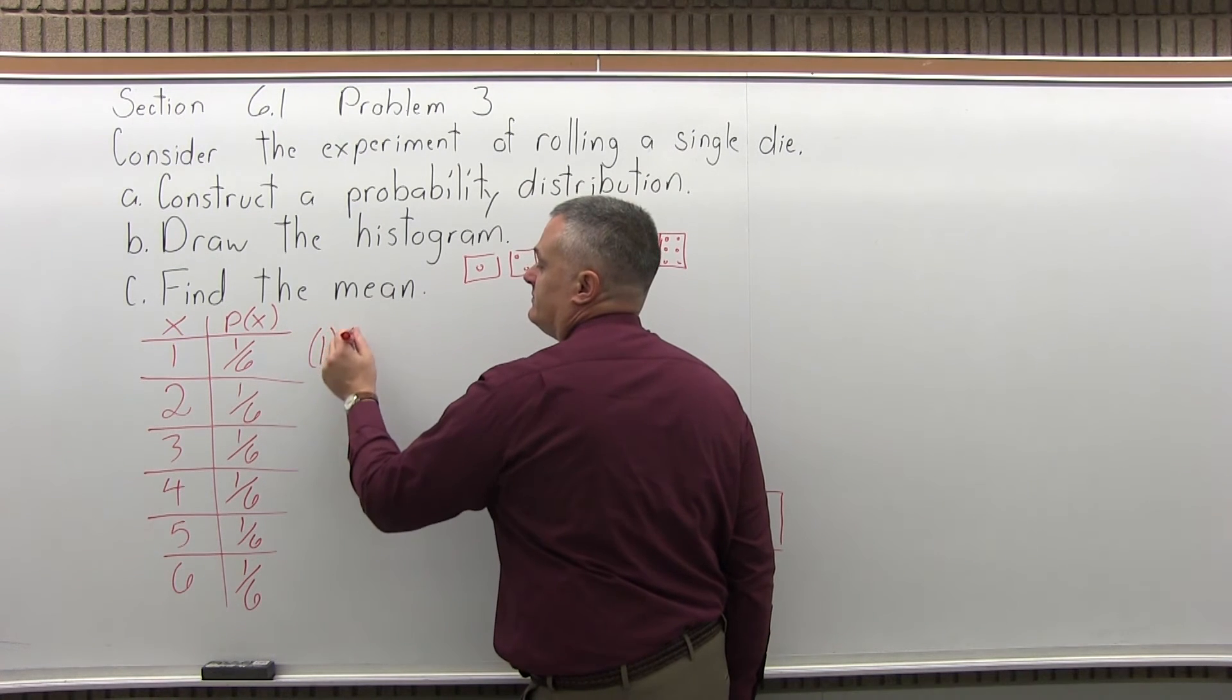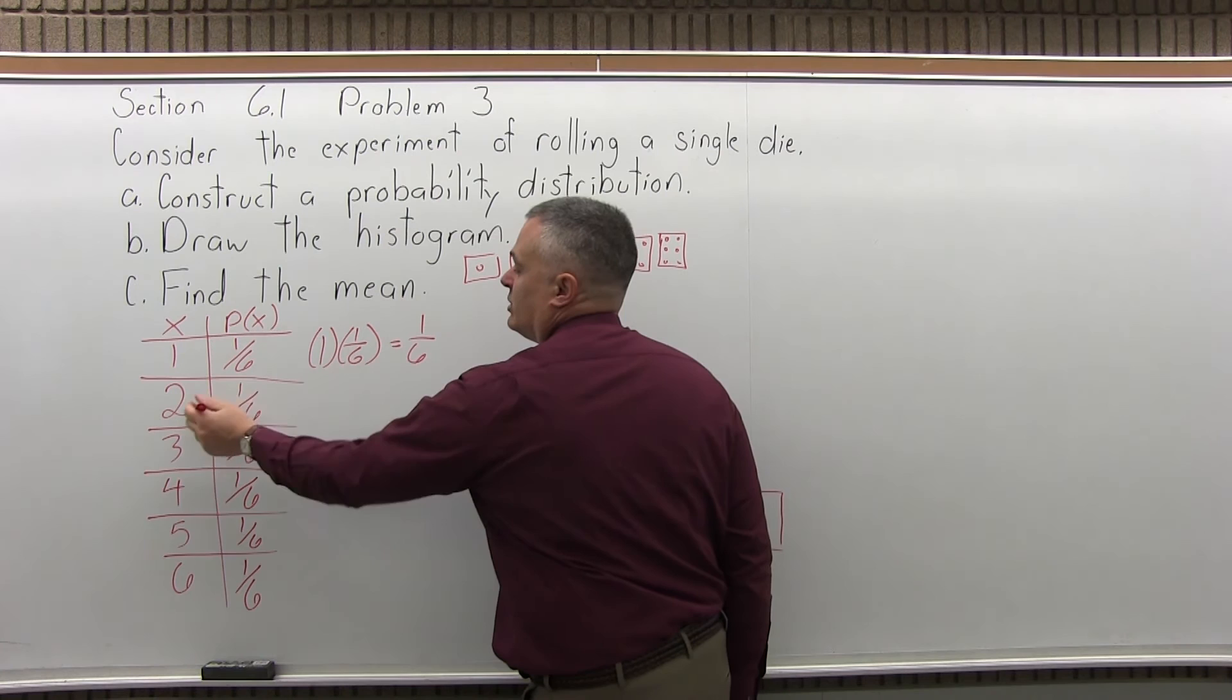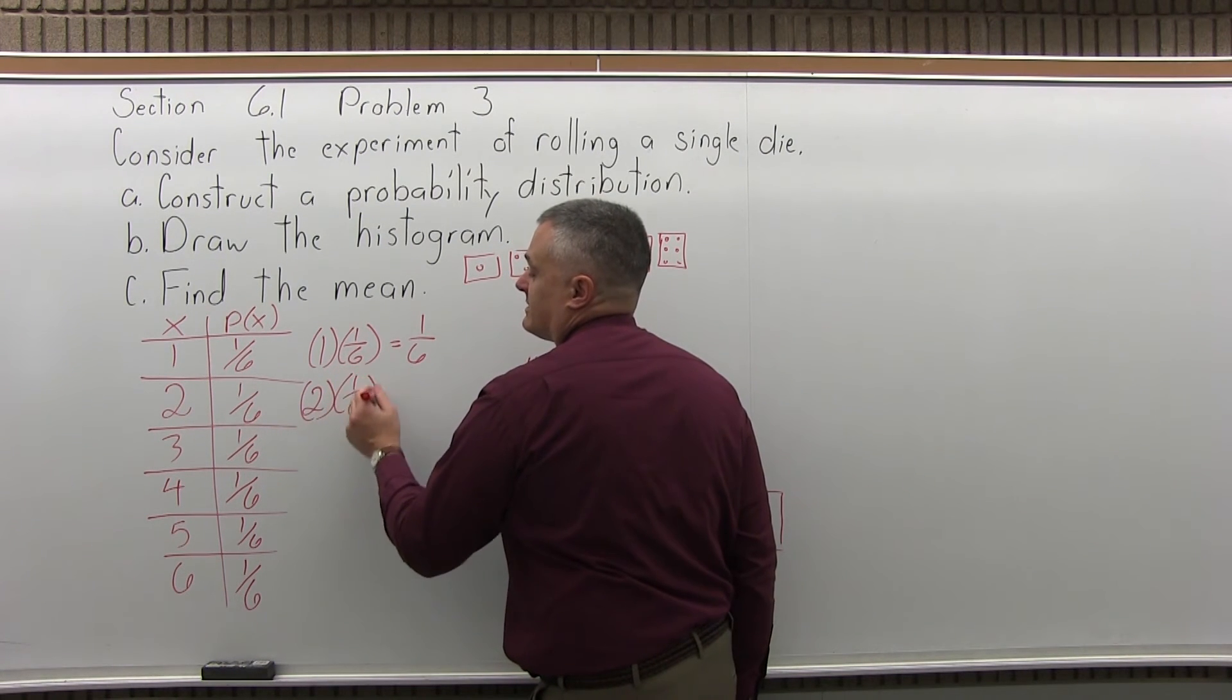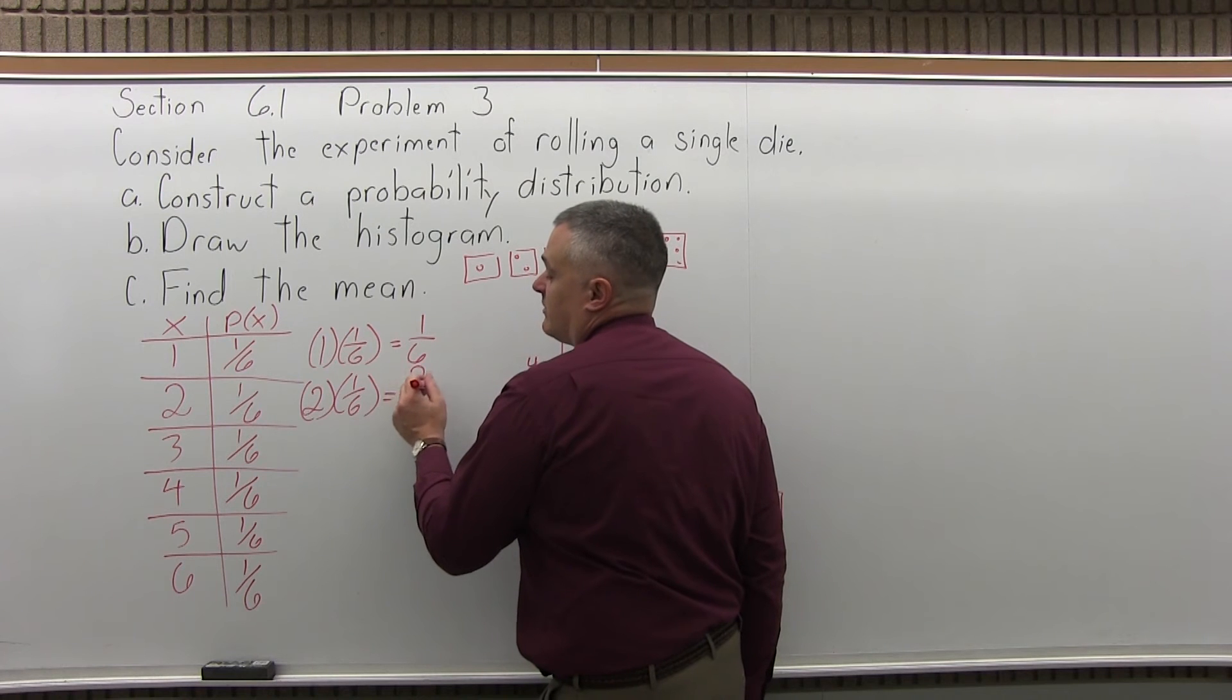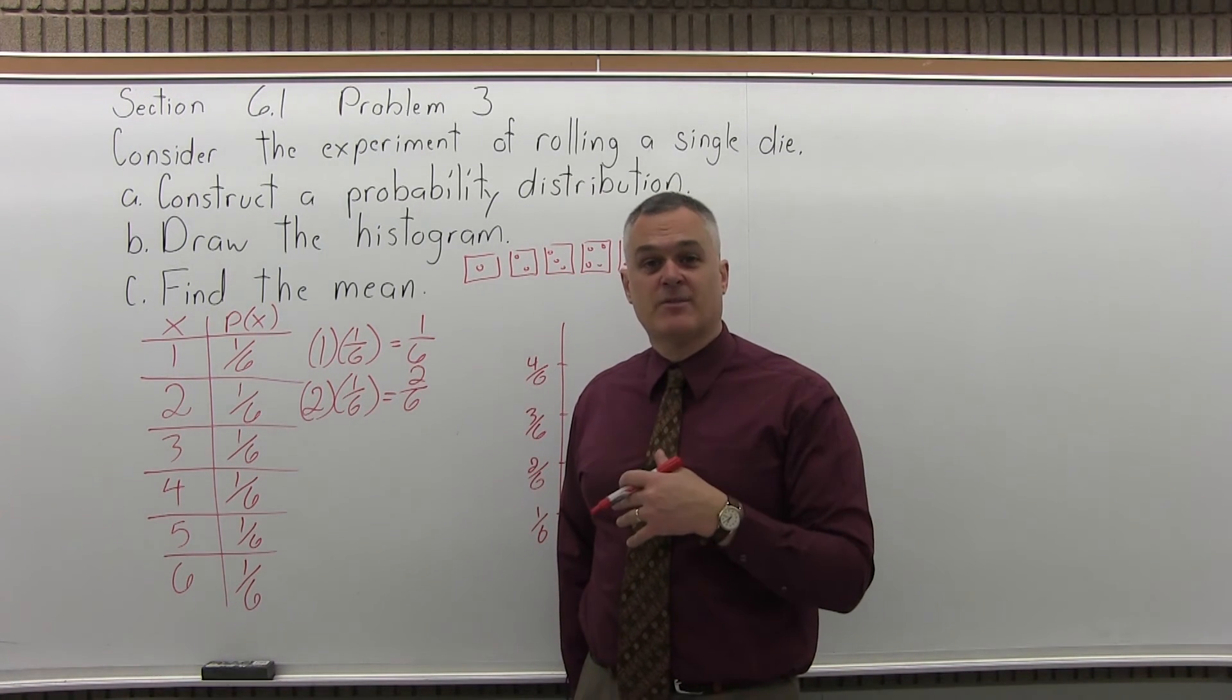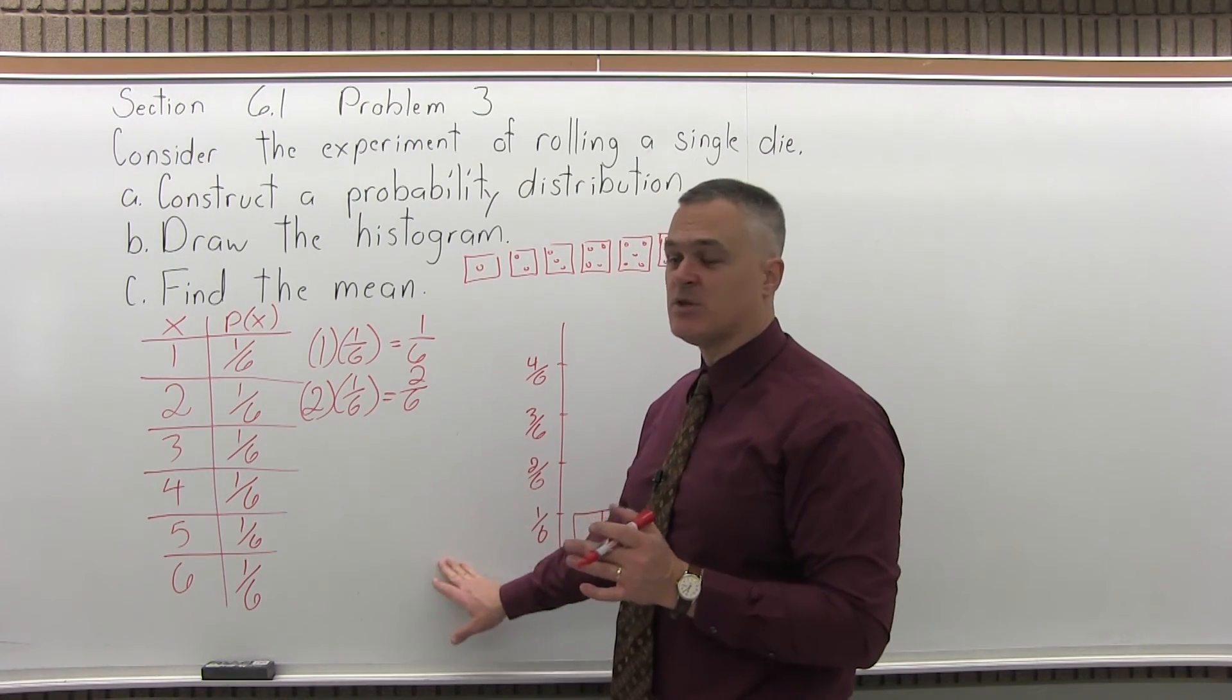So 1 times 1 over 6 is 1 over 6. 2 times 1 over 6 would be 2 over 6. Now I can reduce that, but I'm going to want to keep all the denominators the same for when I add them up at the end. So yes, it does reduce to 1 third, but I want everything with the same denominator.